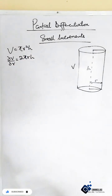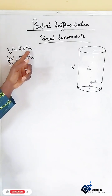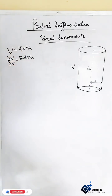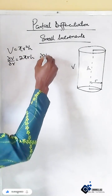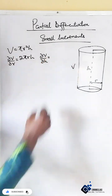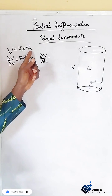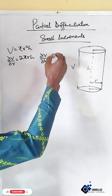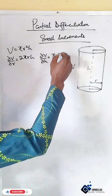That means you are differentiating V with respect to r while keeping h constant. Now the partial derivative of V with respect to h, which implies that we differentiate V with respect to h keeping r constant. So therefore we have πr².